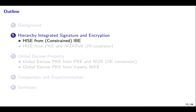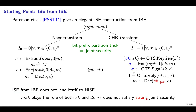We present two generic constructions of HISE. At Eurocrypt 2011, Payson et al. gave an elegant ISE construction from IBE. Their main idea is to apply the Naor and CHK transforms to IBE simultaneously. To achieve joint security, they use a bit prefix trick to partition the identity space used to encode message and tag. However, ISE from IBE does not lend itself to HISE, because the master secret key plays the role of both the secret signing key and the decryption key, and thus does not satisfy strong joint security.